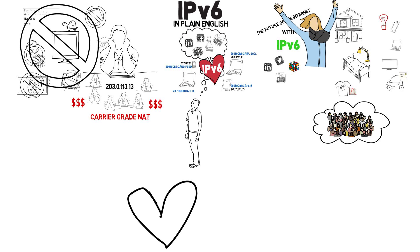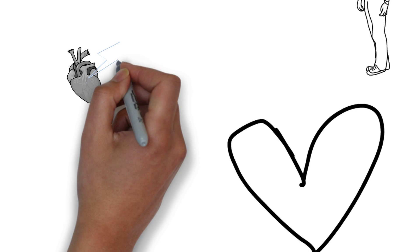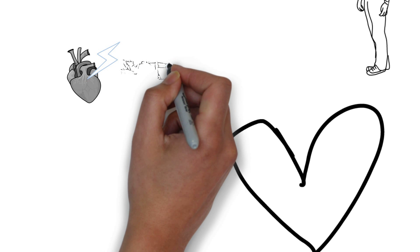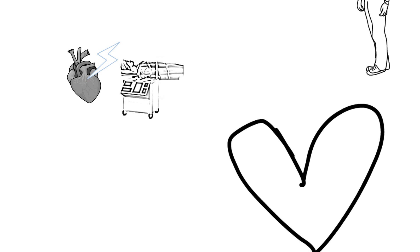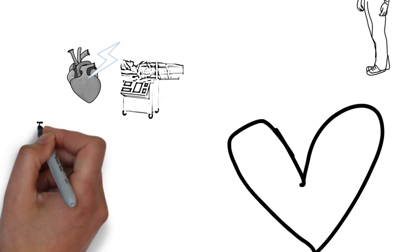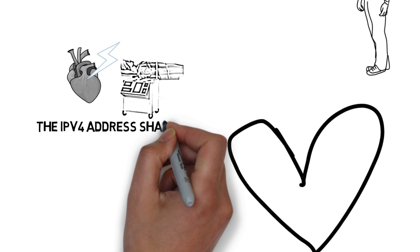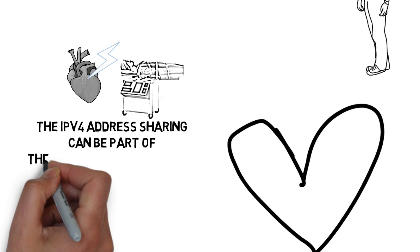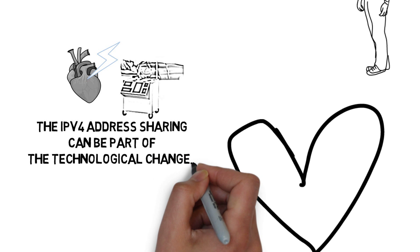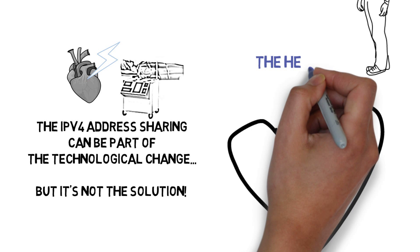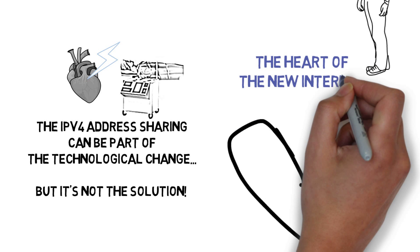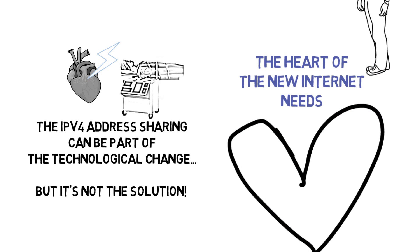Changing the heart of the Internet — the technology that is upgrading the whole network — is not an easy task. It's like a real heart transplant: the patient's blood is temporarily diverted to a machine which operates simultaneously as lung and heart, allowing a successful transplant. However, a patient cannot be connected to the machine for a long time. Similarly, address sharing through CGNAT can be used as a technique to make the Internet work for a while, allowing the deployment of the new technology.